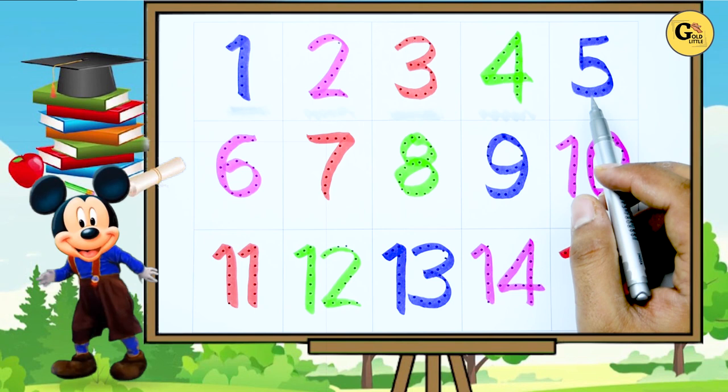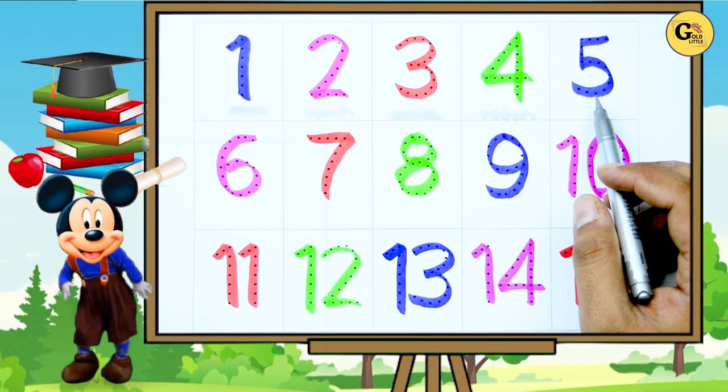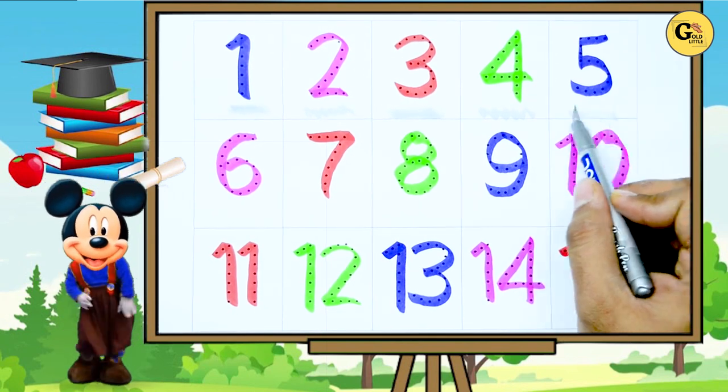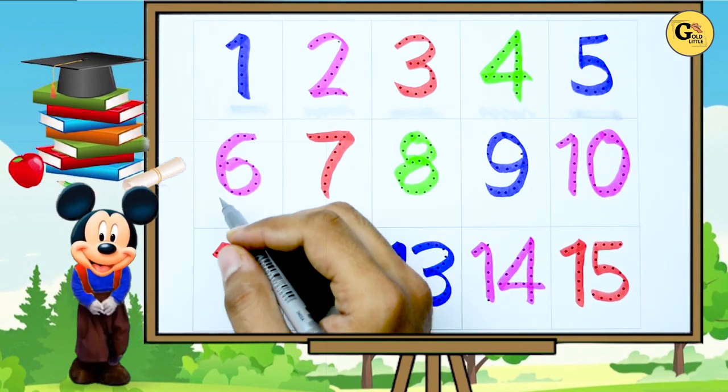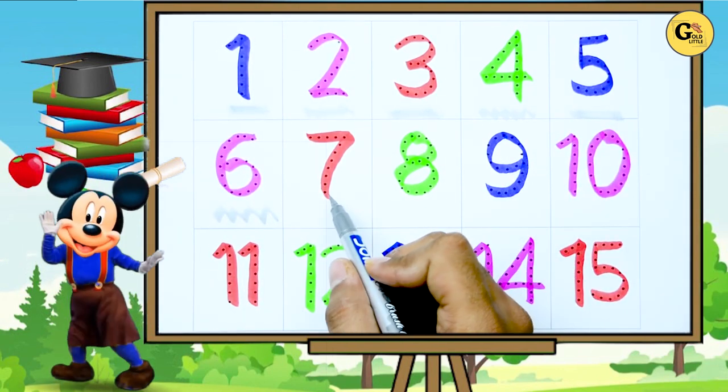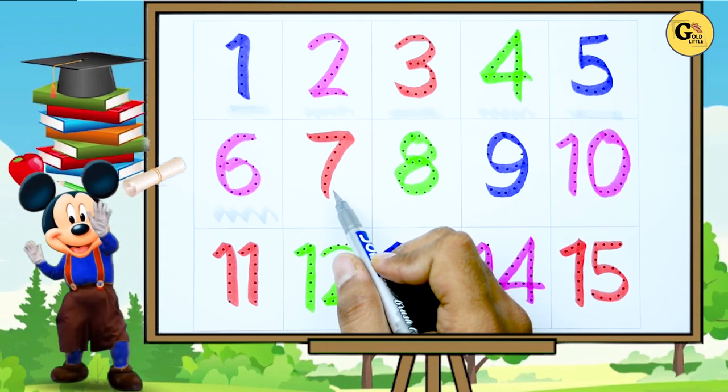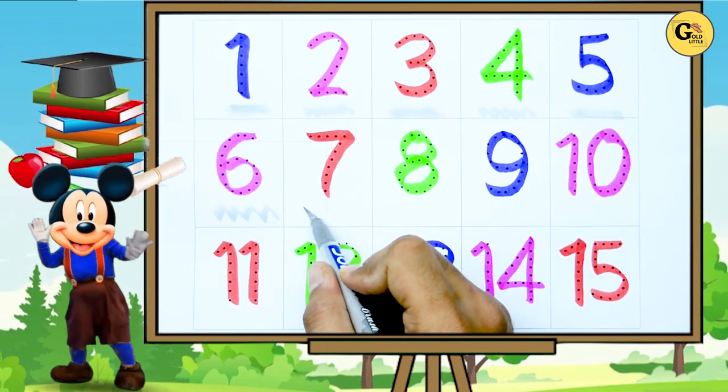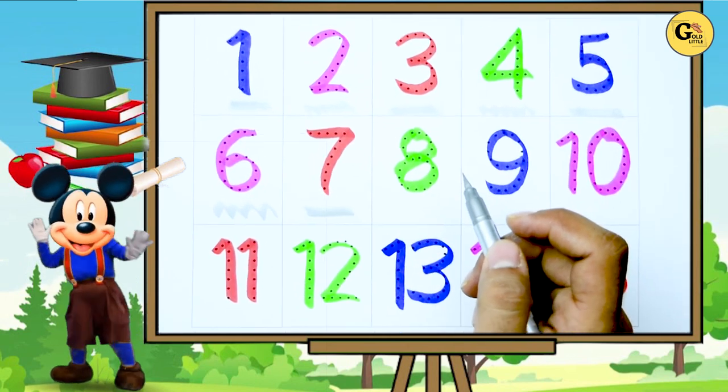Now, which color is this? Blue. Right. It's 5. Blue color, 5. It's 6. Pink color, 6. Which number is this? Tell me. Yes, it's 7. Red color, 7.